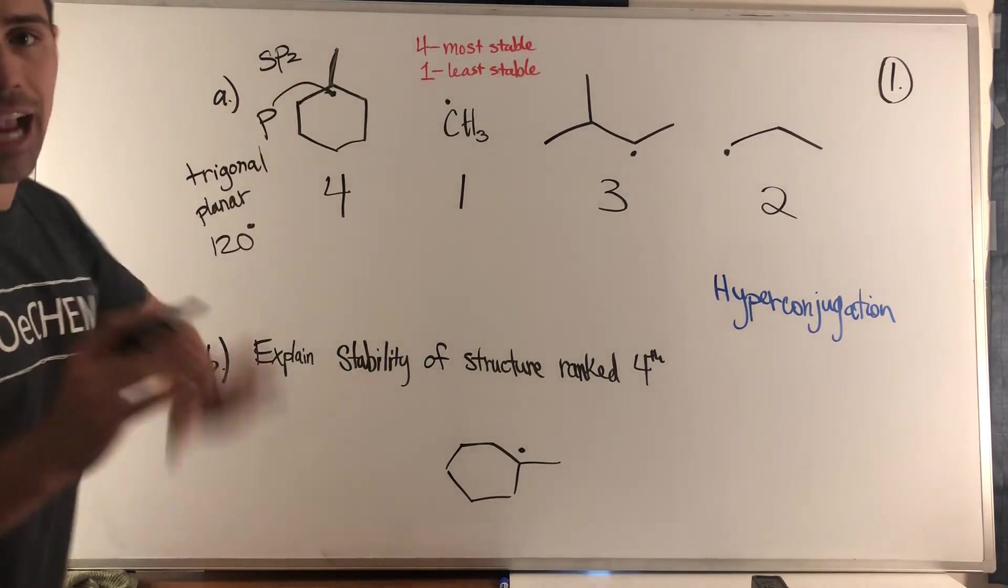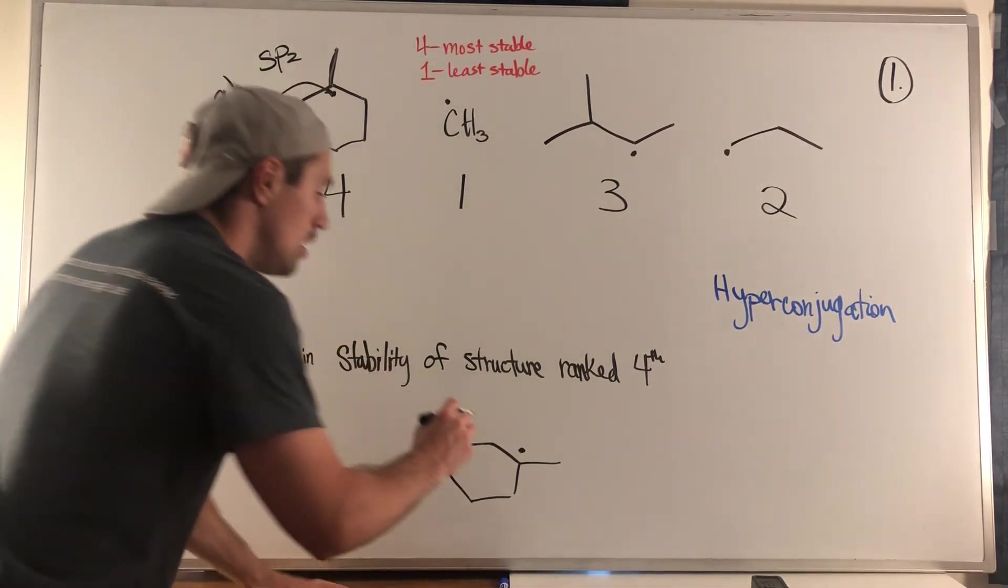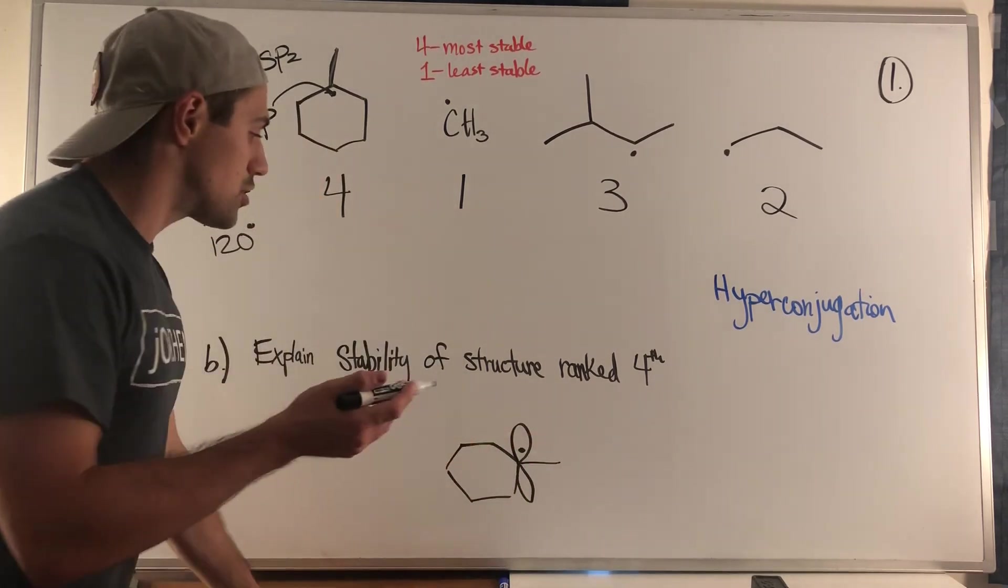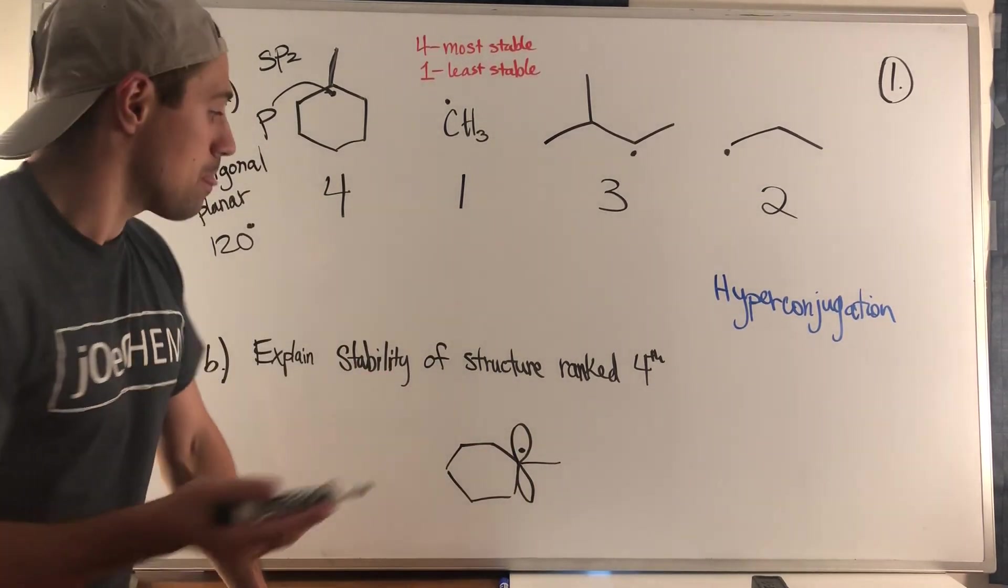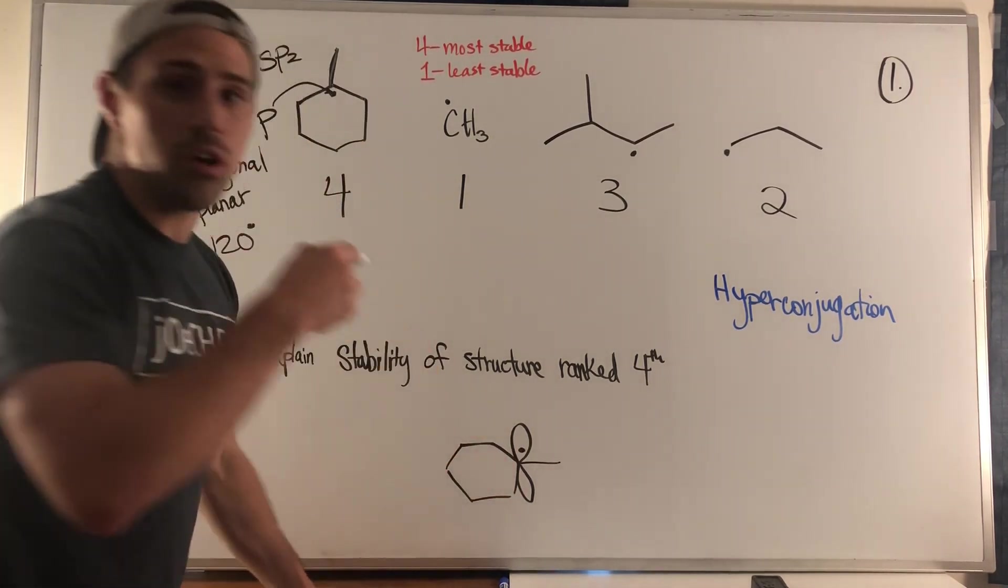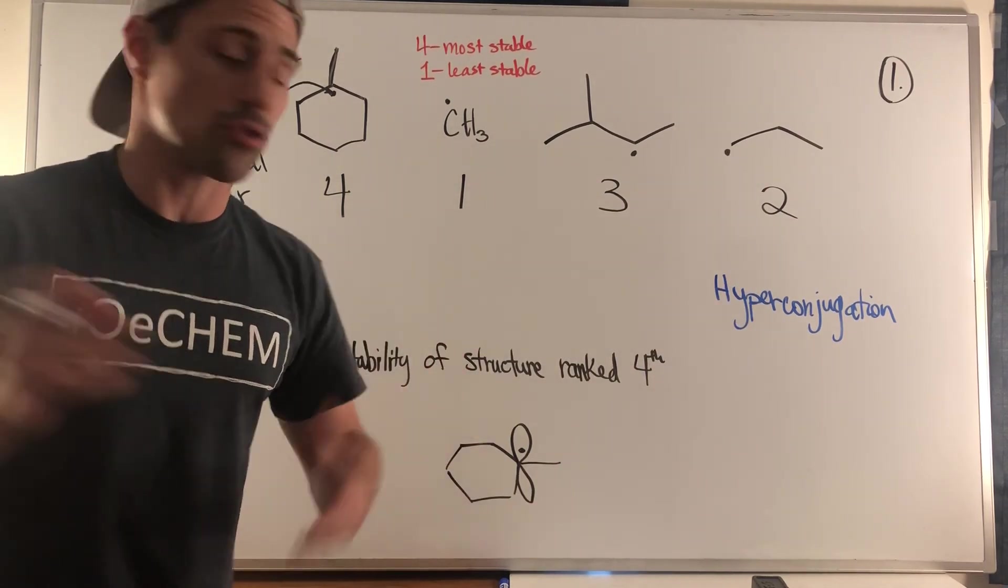The bond angles are 120 degrees, right? We know that from our VSEPR knowledge. But the reason why it's sp2 hybridized is because there is an unhybridized p orbital that houses that radical electron. Don't think of that as an actual organic chemistry arrow. I was just pointing a p at the radical electron.